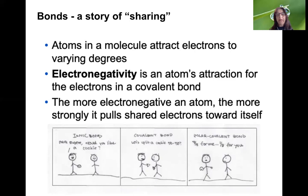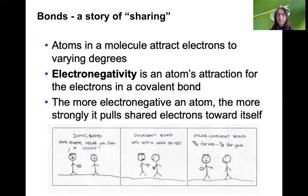Bonds are really a story of sharing. Atoms share electrons in order to complete their outer valence shells. Atoms in a molecule attract electrons to varying degrees depending on how many protons and how big their nucleus is. Electronegativity is a property of each atom and it measures that atom's attraction for electrons in a covalent bond. And you can see in that little cartoon about two friends sharing cookies, the analogy with bonds.